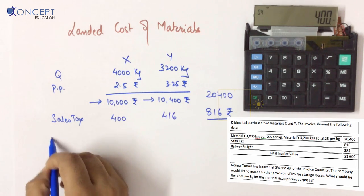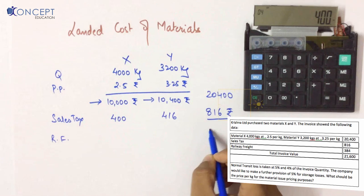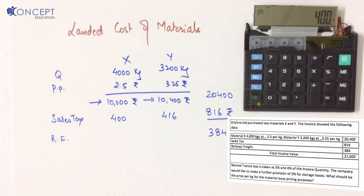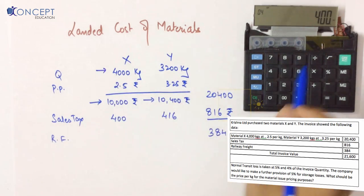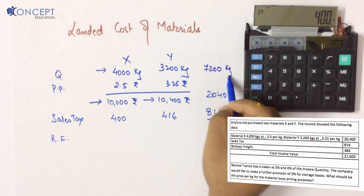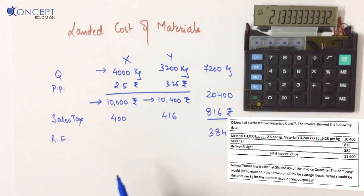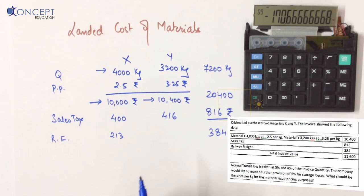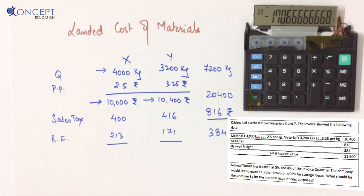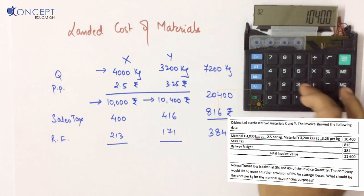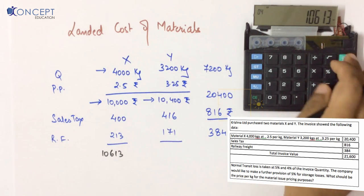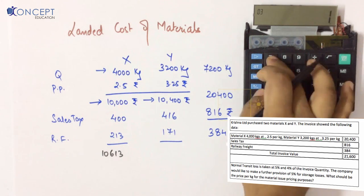Next, railway freight — again a common cost of 384 rupees. Railway freight should be split on the basis of quantity. Total quantity is 7,200 kg. For X: 384 divided by 7,200 into 4,000 equals 213 rupees. For Y: 384 minus 213 equals 171 rupees. So total cost of X: 10,000 + 400 + 213 = 10,613. Total cost of Y: 10,400 + 416 + 171 = 10,987.